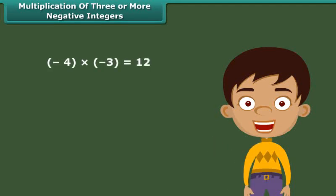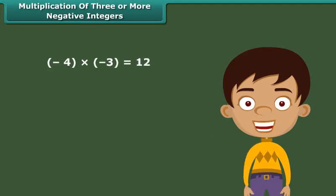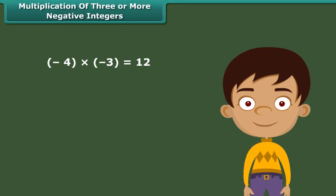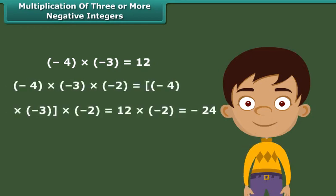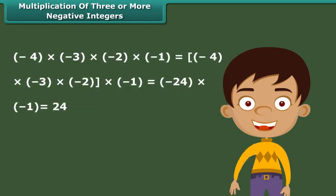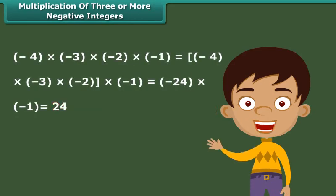From these products we observe that the product of two negative integers is a positive integer. The product of three negative integers is a negative integer. The product of four negative integers is a positive integer.